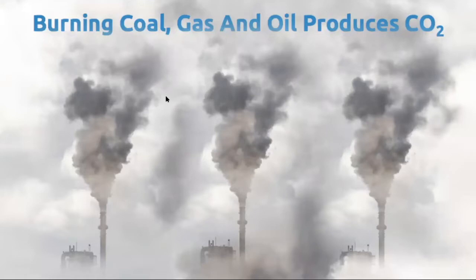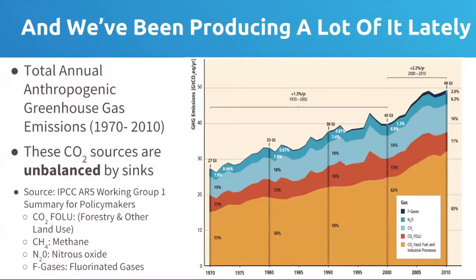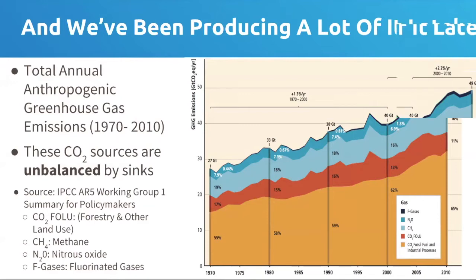We know that if we burn fossil fuels — things like coal, natural gas, or oil — that produces carbon dioxide as a product of combustion. Fossil fuels are formed from organic material, the remains of once-living plants and animals that have been buried, subjected to lots of heat and pressure, and turned into these fuels. We are accelerating our rates of returning that carbon dioxide — once trapped by those plants — back into the atmosphere.